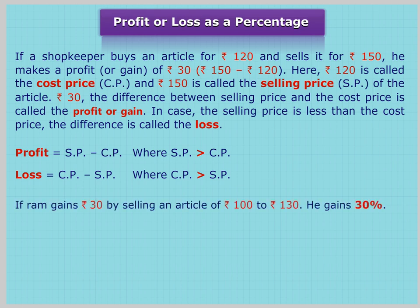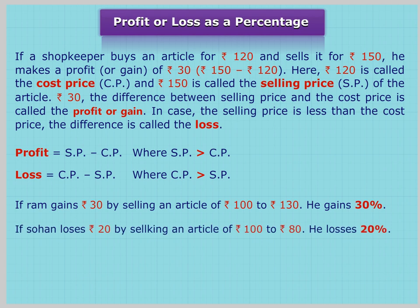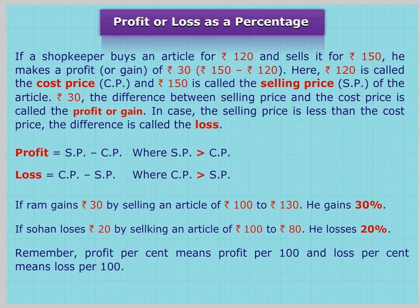If Ram gains Rs. 30 by selling an article from Rs. 100 to Rs. 130, he gains 30%. If Sohan loses Rs. 20 by selling an article from Rs. 100 to Rs. 80, he loses 20%. Remember, profit percent means profit per hundred, and loss percent means loss per hundred.